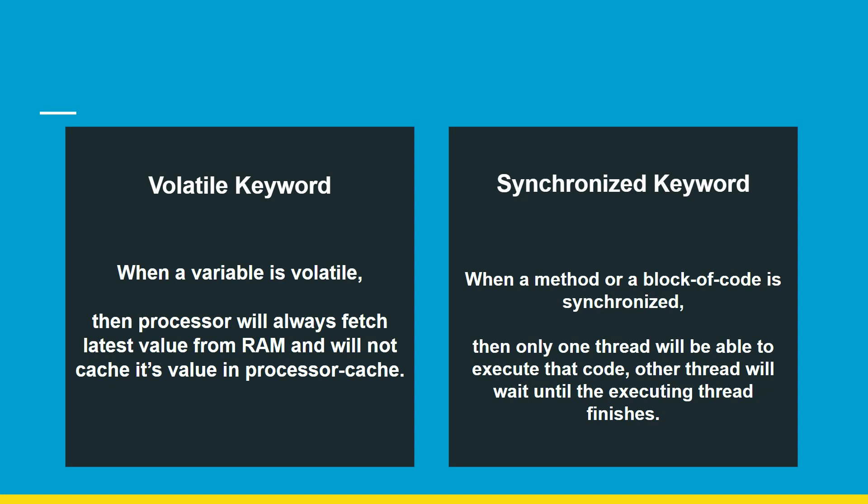To summarize: only a variable can be declared volatile — when a variable is volatile, the processor always fetches the latest value from RAM and does not cache it in the processor cache. A method or block of code can be synchronized — when synchronized, only one thread can execute that code at a time; other threads wait until the executing thread finishes. Additionally, inside a synchronized block or method, all instance variables used are automatically treated as volatile by Java. That is the difference between the volatile and synchronized keywords.